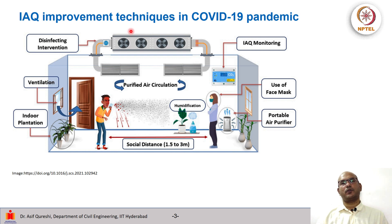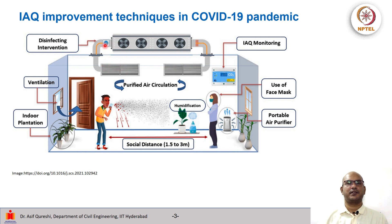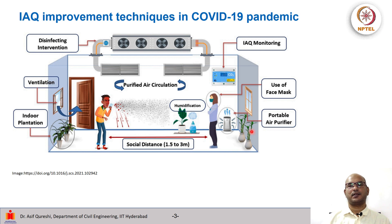These were some air quality improvement techniques during the COVID-19 pandemic. A person emitting some virus, there was social distancing, then humidification which led to the movement of aerosols downwards towards the floor and not in people's breathing space. Then there was purified air circulation, disinfection intervention in the AC system, ventilation, use of plants, face masks and portable air purifiers, and indoor air quality was monitored.